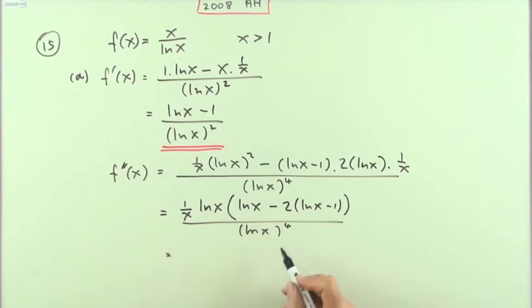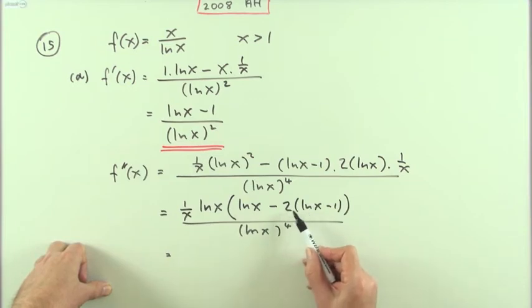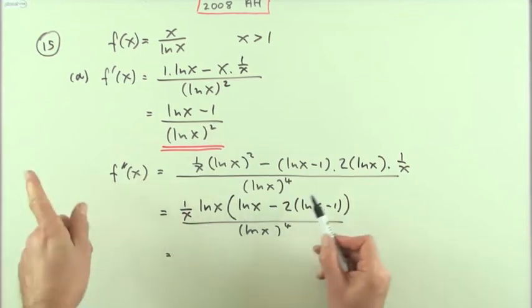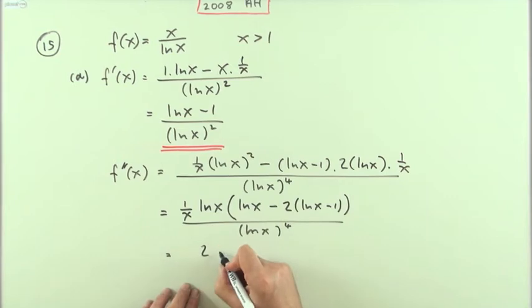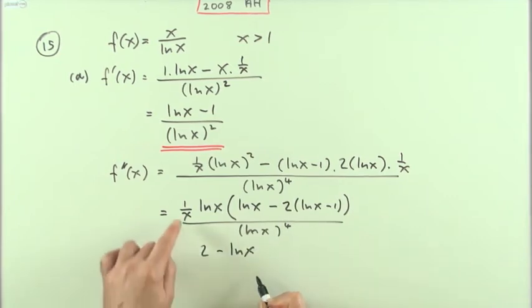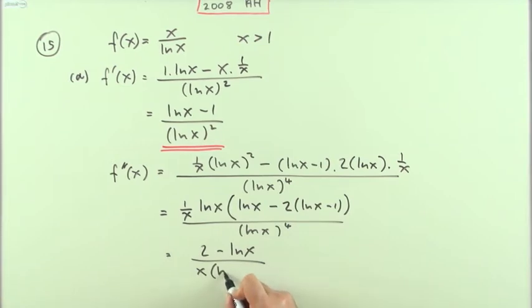This part in here is going to give me, I've got ln x, take away two of them, so that's just one, and that's going to be plus two. So I've got two minus ln x. The x can go underneath, and that ln x will knock out one of those, making it ln x to the power three.